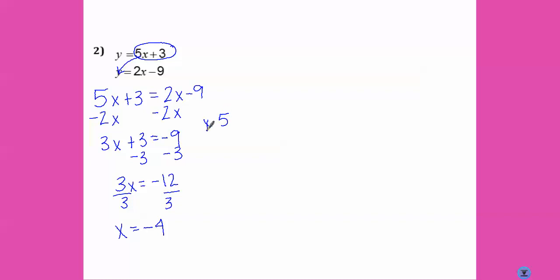So 5, sorry. Y equals 5 times negative 4 plus 3. 5 times negative 4 is negative 20. Plus 3. Y equals negative 17. That's the real answer. See? Negatives are very important. Don't forget them.